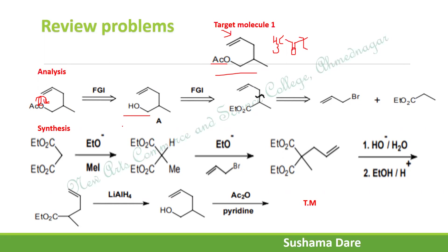The remaining functional group is a primary hydroxy group. Whenever a primary hydroxy group is present, apply a retro-reduction reaction — write down the carbonyl group in its place via FGI, converting it to an ester functional group. The best disconnection is then next to the alpha carbon but in the direction of the alpha bond.